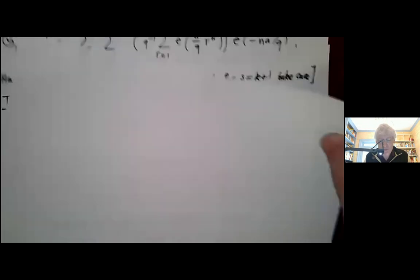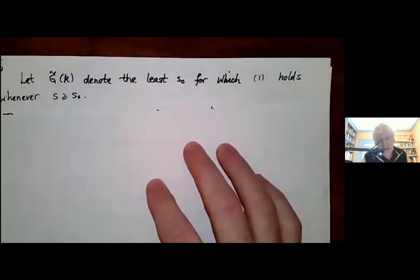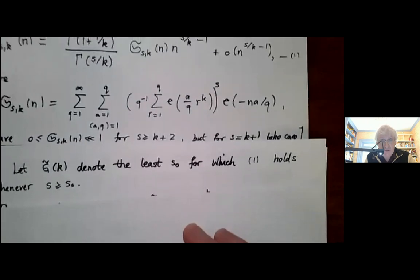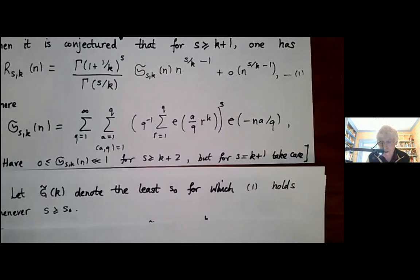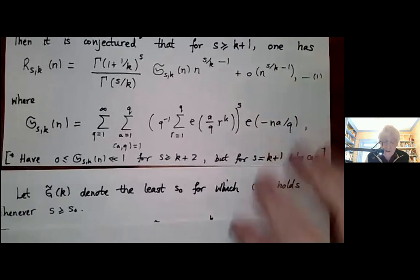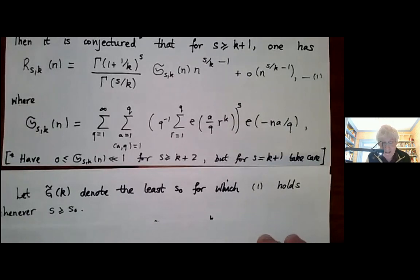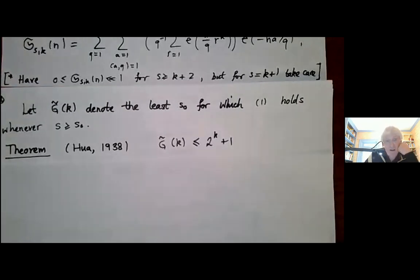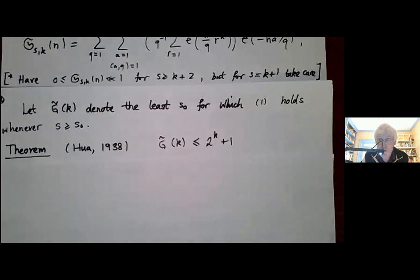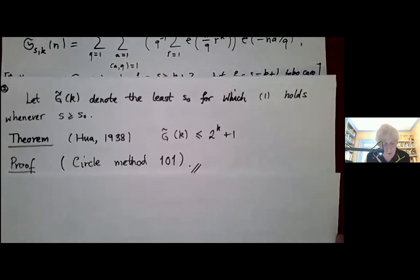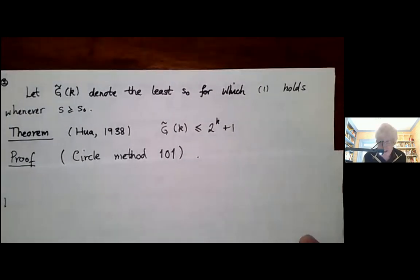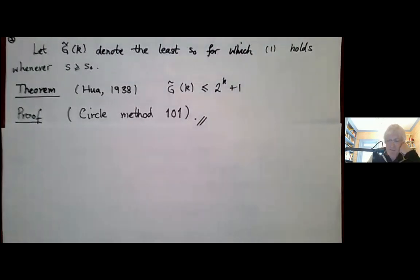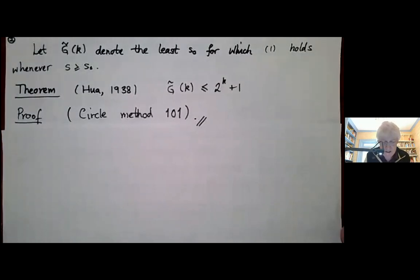So let's define g̃(k) as the number of variables required to establish this asymptotic formula. That gives me a way of measuring what we can actually prove. We conjecture that should be just k plus 1. And this is really the starting point for this talk in many ways. There's a nice classical result of Hua from 1938 that shows that with 2^k plus 1 variables you get to prove this asymptotic formula. The proof is what you prove in your very first course in the circle method.